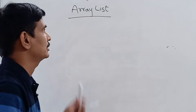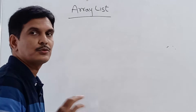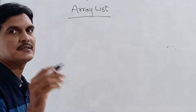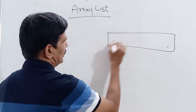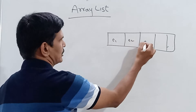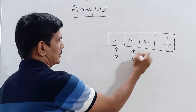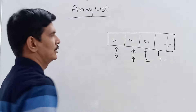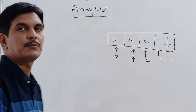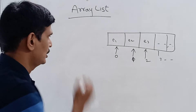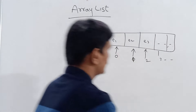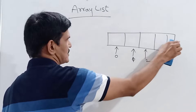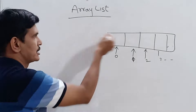Now let's discuss the different methods available in ArrayList. The first method is add(). If you have an empty ArrayList and want to add a new object, you use the add method and specify the object. This method adds the new element to the ArrayList at the end.